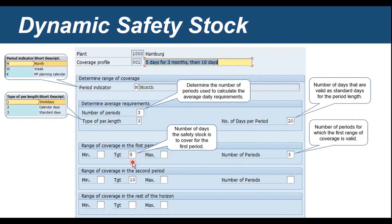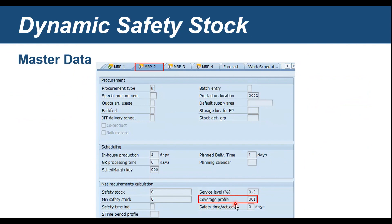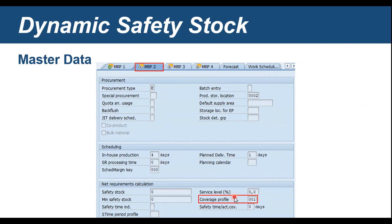For the first five days it will be considered for three months, and then after the three periods, ten days will be considered in the calculation. We assign the coverage profile in the MRP2 view — that's it for configuration and master data. The next and most important point is the calculation. There are a few formulas for how the dynamic safety stock will be calculated. I've set this up with a few constants to make it easy to understand.